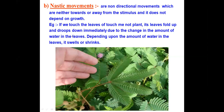The most common example of nastic movements is the touch-me-not plant. When you touch the leaves of the touch-me-not plant, they will fold and droop down immediately. What happens is that there is a structure which is swollen because water is present. When the water is removed from there, it has shrunk. So when it is swollen, the leaf is open. But as it has shrunk, all the structures close and the leaves droop down.